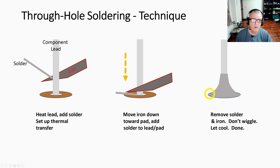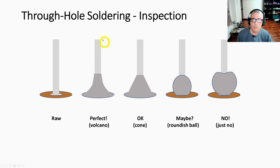When you're done, it should look like this—it should look like a volcano. As it's cooling, you do not want to wiggle it. Let it cool, let it solidify. If you wiggle it when it's cooling, you will probably end up with a cold solder joint—a high resistance joint, as they say.